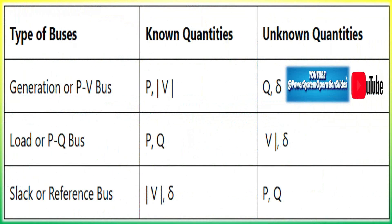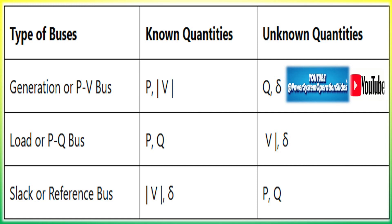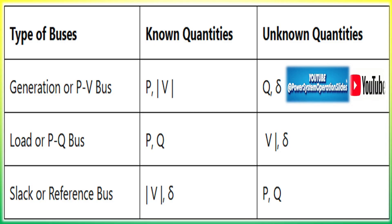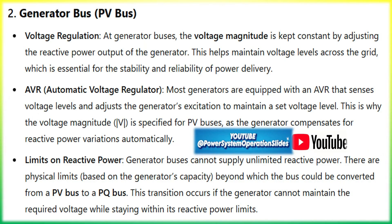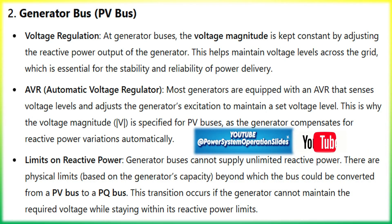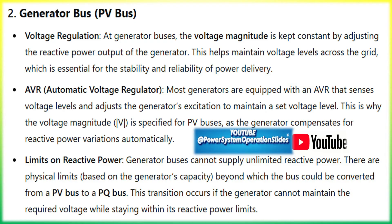Example: a distribution substation where loads like industries, commercial buildings, or residential areas are connected. In real-world power systems, a significant portion of the buses are load buses, representing points where power is consumed by different customers. These loads can vary throughout the day, especially in residential areas due to lighting, air conditioning, or appliances. Industrial loads can also have complex power requirements, including heavy machinery or induction motors.